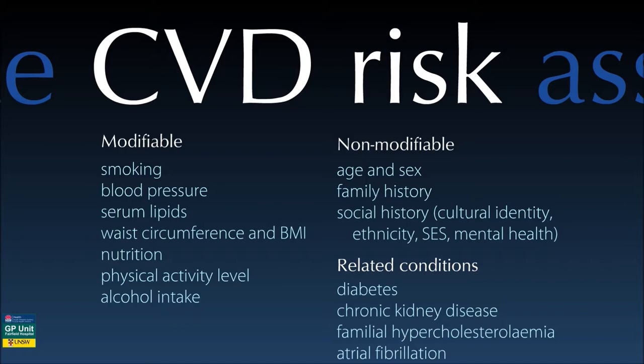In Australian general practice, we talk about the SNAP lifestyle factors: smoking, nutrition, alcohol, and physical activity. These are factors that need to be assessed for risk and also for intervention. The non-modifiable risk factors include age, sex, and family history. Socioeconomic status is being increasingly recognised as a risk — people who are members of a relatively deprived community have markedly increased cardiovascular risk, double in some circumstances.